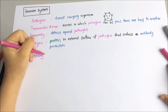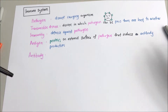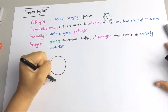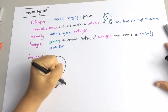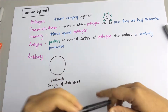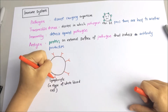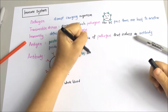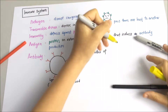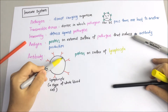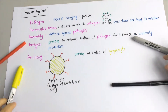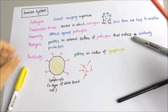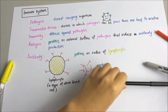So what is an antibody? An antibody is a protein on the surface of a lymphocyte — a type of white blood cell. Antibodies can also exist in another form, which is as a protein released by lymphocytes in response to a specific antigen.